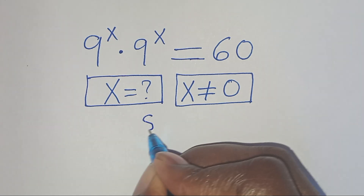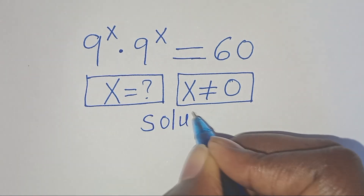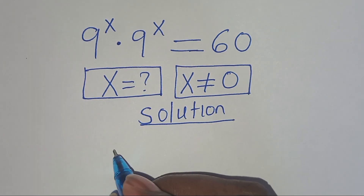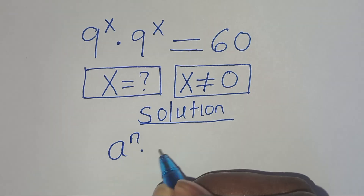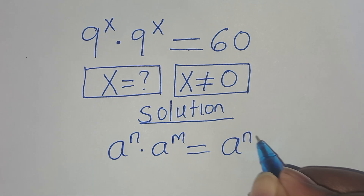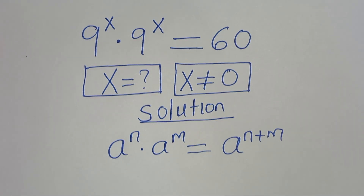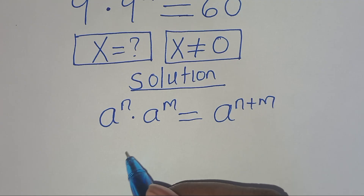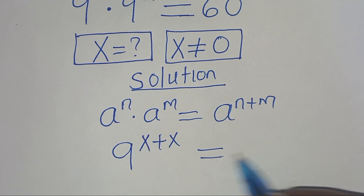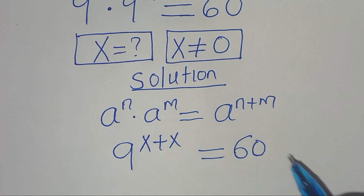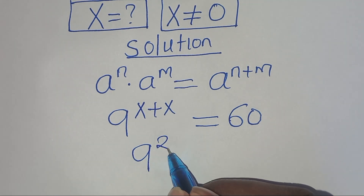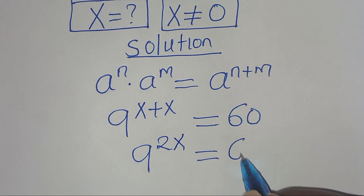Let's present the solution from here. This exponential equation is in the form of a to the power of n times a to the power of m, which we can express as a to the power of n plus m. Applying this exponent property, then we have 9 to the power of x plus x, which is 2x, and this is equal to 60.